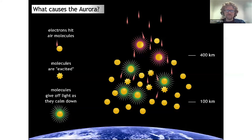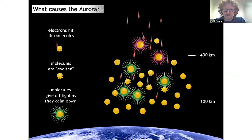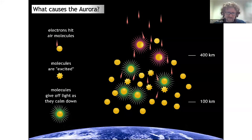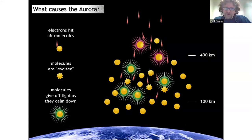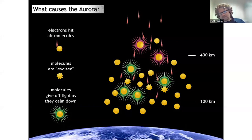What causes this Aurora? Aurora is caused by particles from space, usually electrons, but sometimes other particles, and they hit the atoms and molecules in the atmosphere. When they hit those atoms and molecules, those atoms become excited. A little bit of quantum mechanics: the electrons in the atom will absorb some energy from the collision. And then when these atoms and molecules relax or calm down, they release that energy as light.